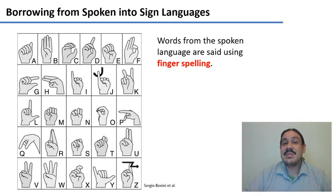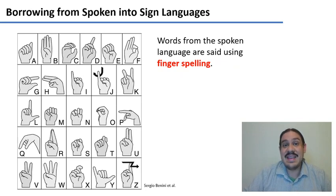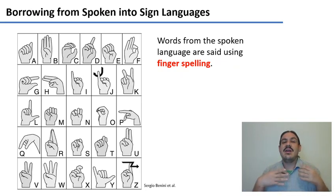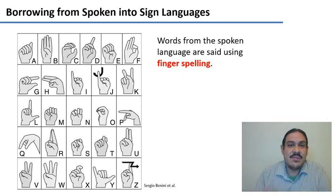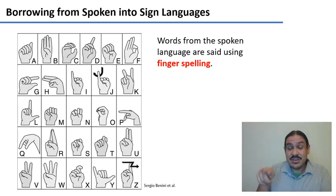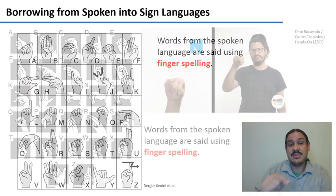Here's something very important: not all fingerspelling systems are the same. Every sign language has a different type of fingerspelling, depending on what written languages they will have contact with. For example, this is the one for ASL, and it has all of the letters — the glyphs — that are contained in the English writing system.